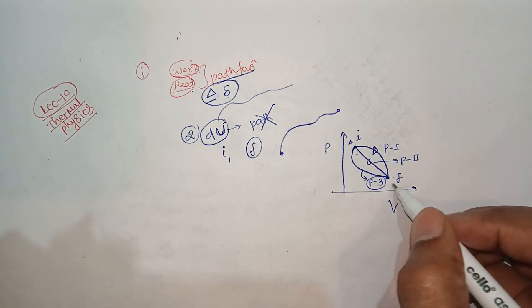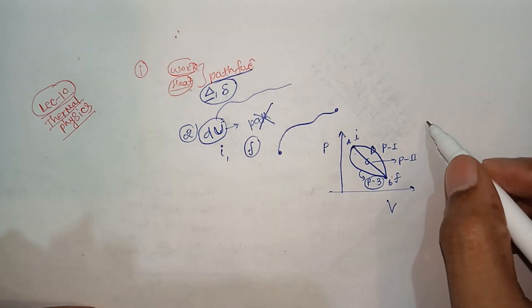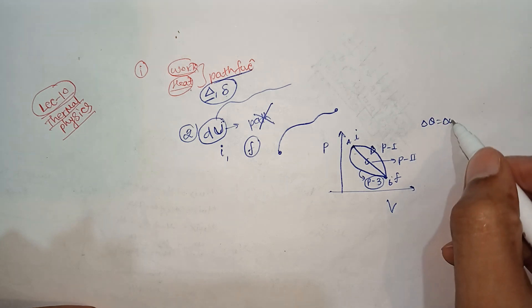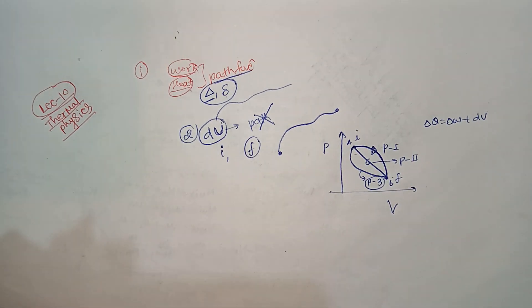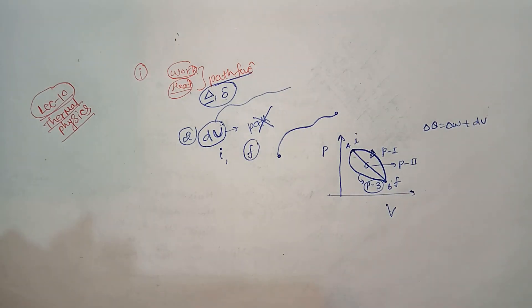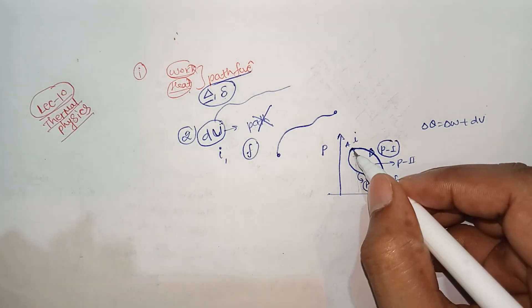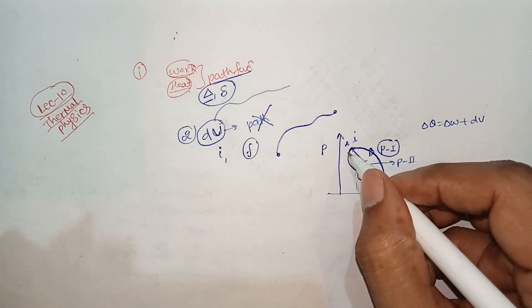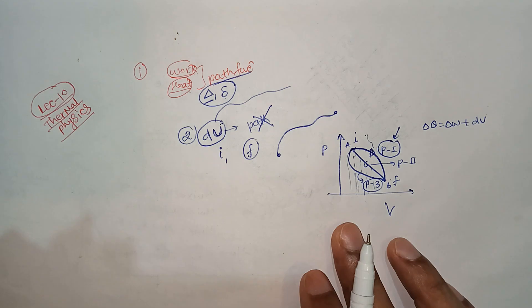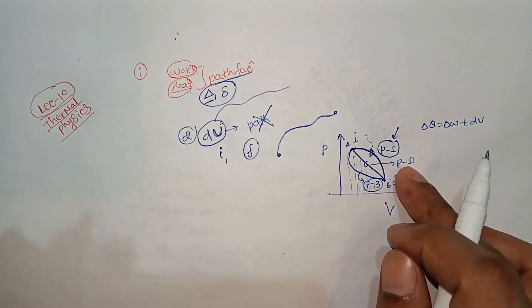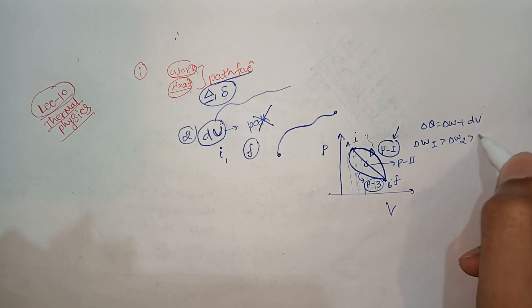From point A to point B via different processes, applying the first law of thermodynamics: ΔQ = ΔW + ΔU. On a PV graph, the work done equals the area under the curve. So, work done of path one is greater than work done of path two, which is greater than work done of path three.